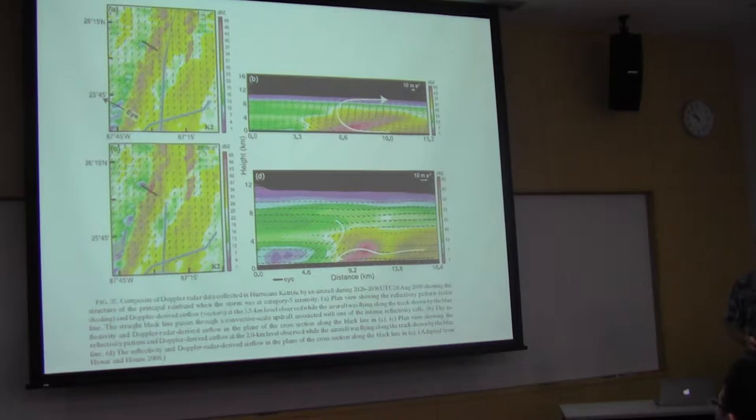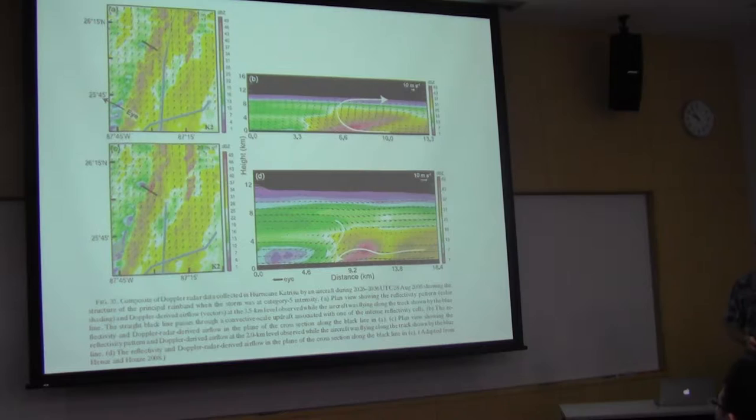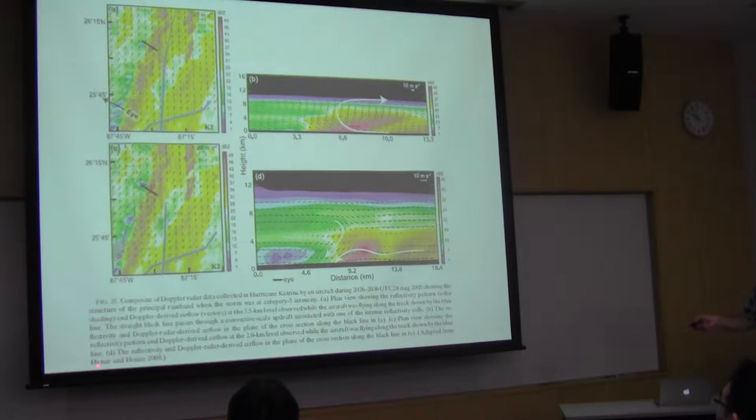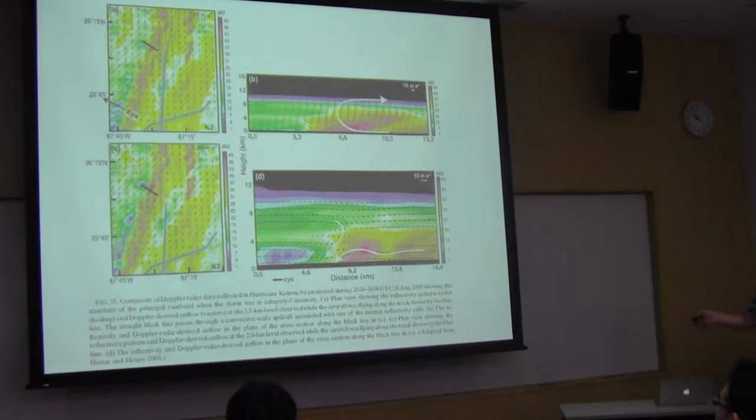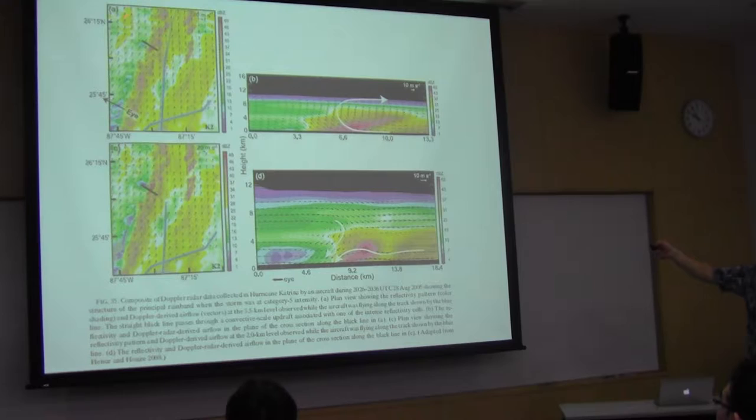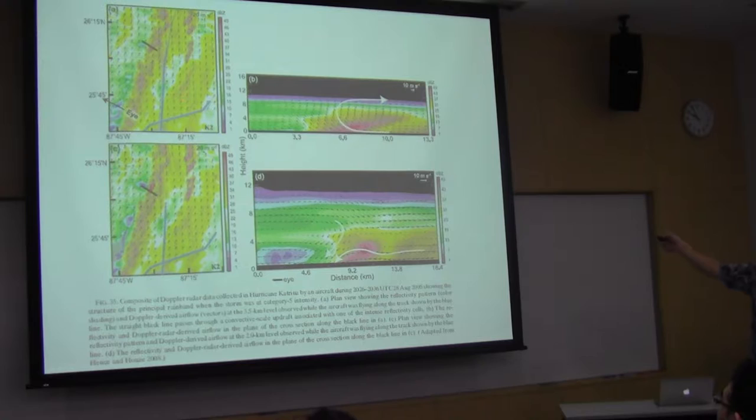We were able to look at this structure even better in RainX. This is a figure from Henson House—Deanna Henson was Bob House's PhD student, she's now a professor at the University of Illinois. This is a rain band through Hurricane Katrina when it was at Category 5. This is a top-down cross-section of the principal rain band, so we're on the east side of the storm.